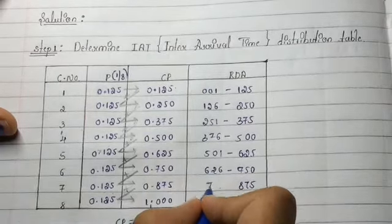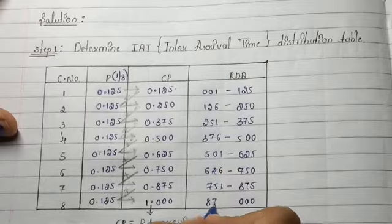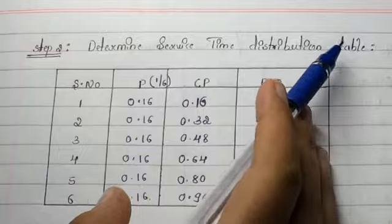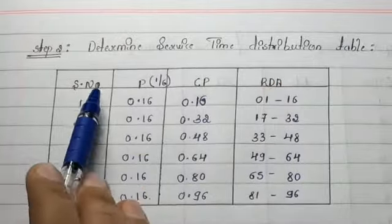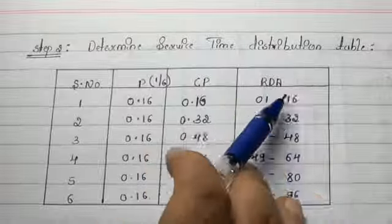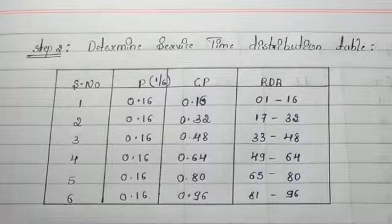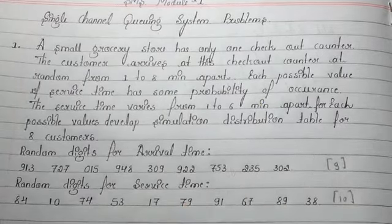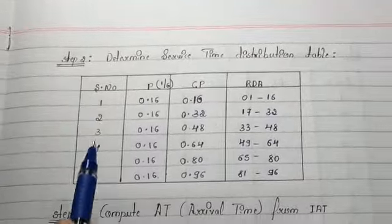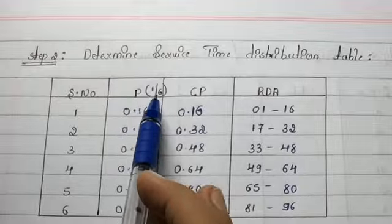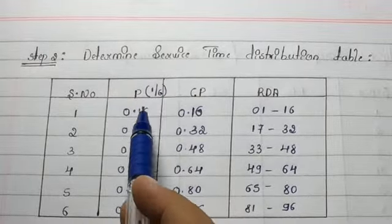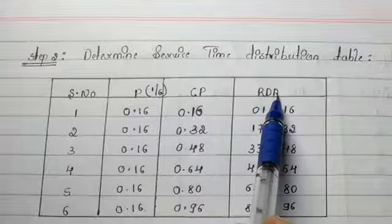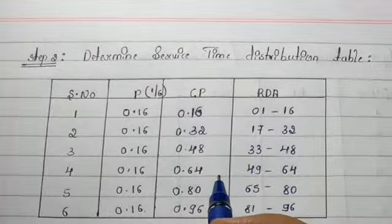This is the second step — determine the service time distribution table. We need four columns: serial number, probability, cumulative probability, and random digit assignment. From the question, service time varies from one to six minutes, so we write one to six. The probability for each is 1/6, which equals 0.1667. Cumulative probability and random digit assignment are calculated the same way as in step one.